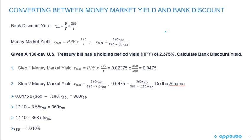This slide goes through the calculations again because sometimes it's just good to slow down and do something twice. The bank discount yield is discount over face times 360 over T. The money market yield is the holding period yield times 360 over T, or written as 360 times the bank discount yield over 360 minus time times the bank discount yield. Step one: calculate the money market yield using the holding period yield.